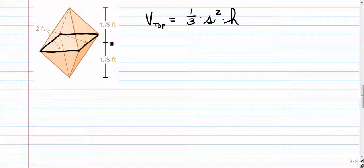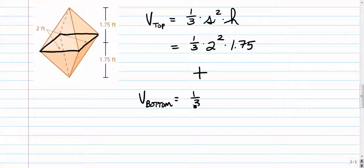That's a square. Alright, so here we go. One-third times two squared times the height, which is 1.75. And we're going to add that to the volume of the bottom one. Volume of the bottom one should be the same. One-third times two squared times 1.75.